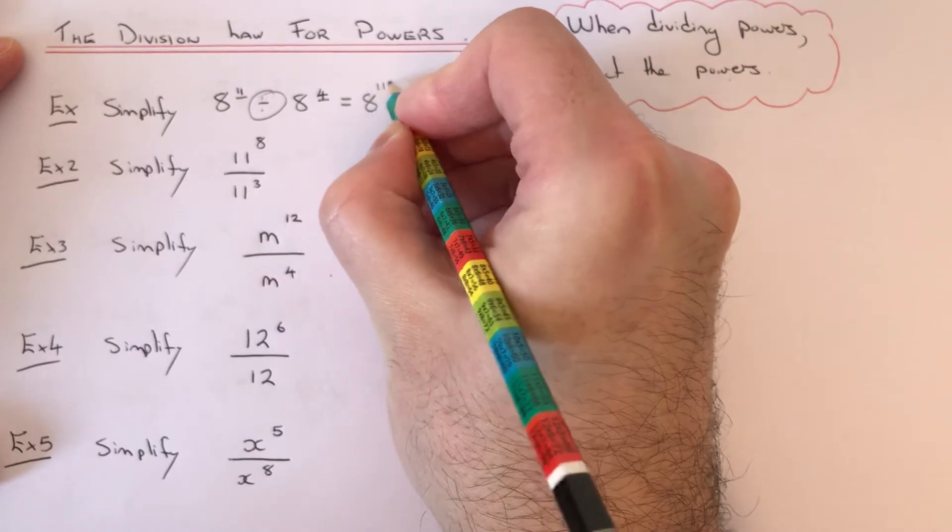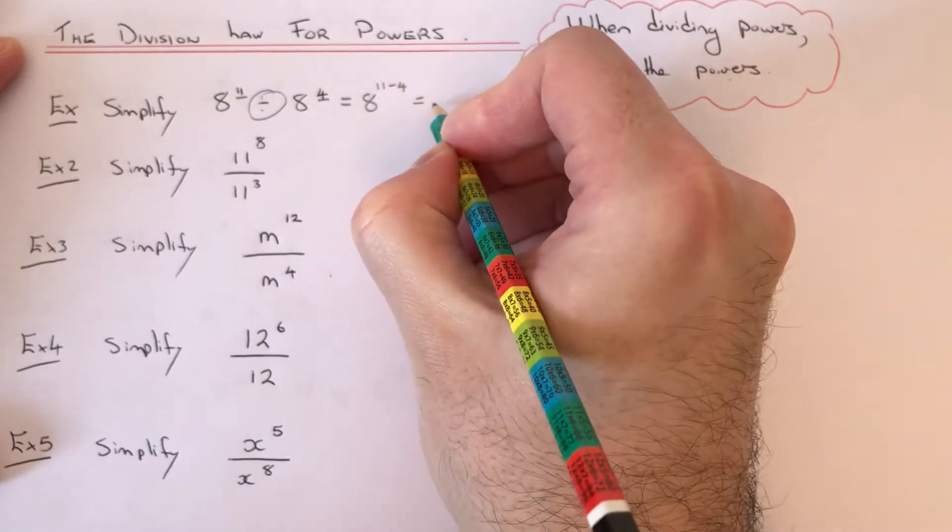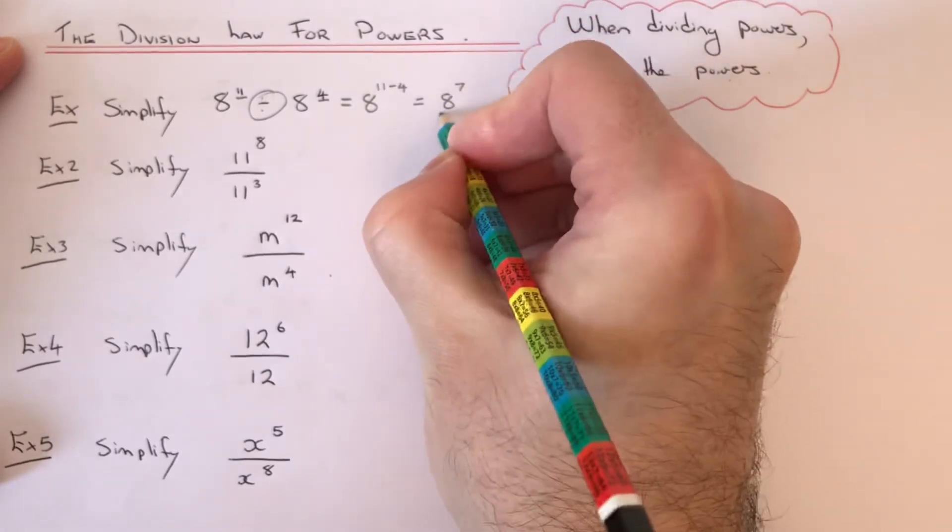This will be 8 to the power of 11 take away 4. So 11 take away 4 is 7, so we get 8 to the power of 7.